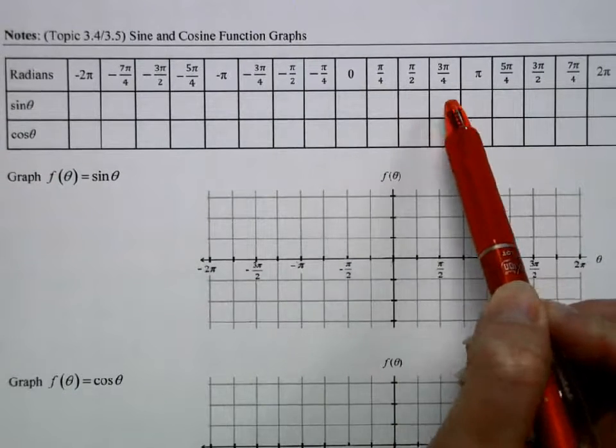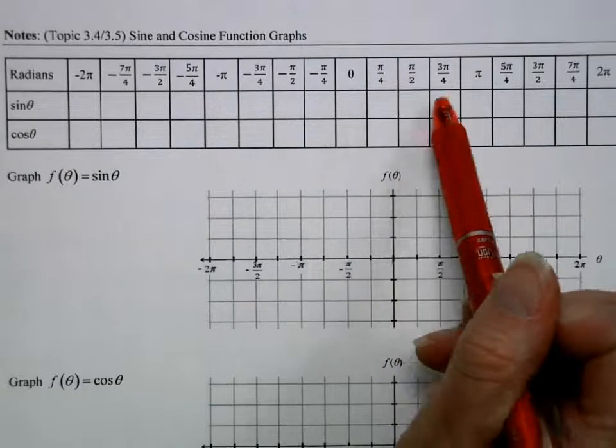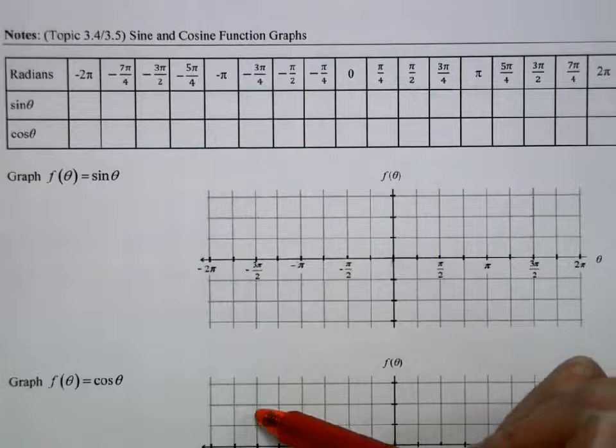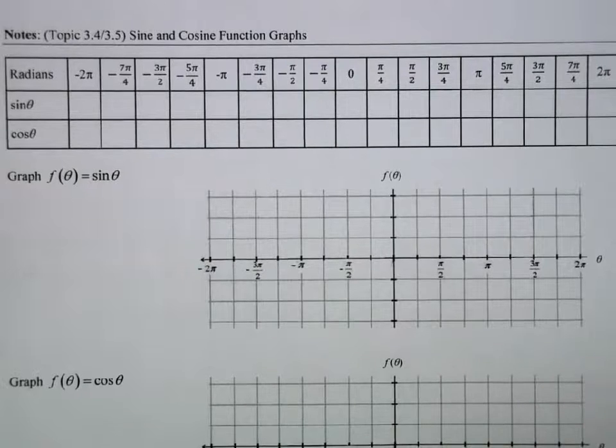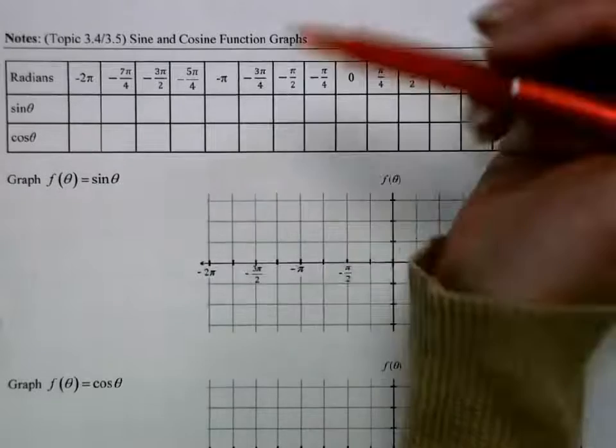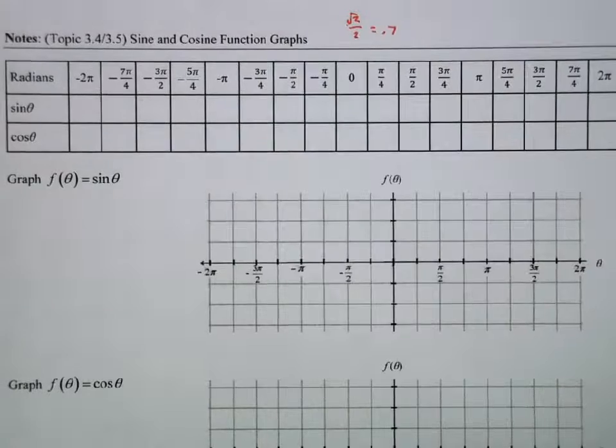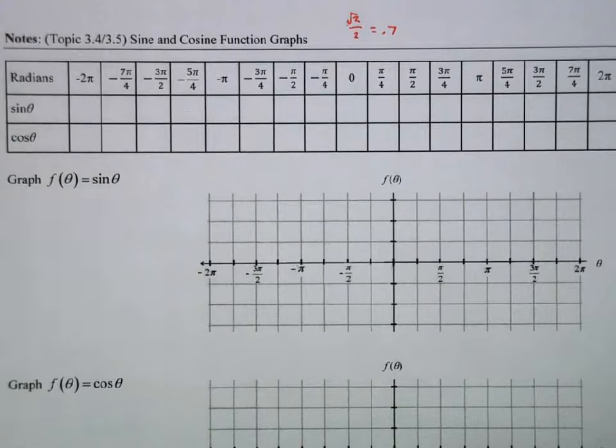So we've got 0, π over 4, π over 2, 3π over 4, and so on. At the π over 4's, those are going to be our √2 over 2's. Depending on what quadrant we're in, that'll be positive or negative. √2 over 2 is approximately, for our purposes, 0.7, because we're not going to graph much more accurate than that.